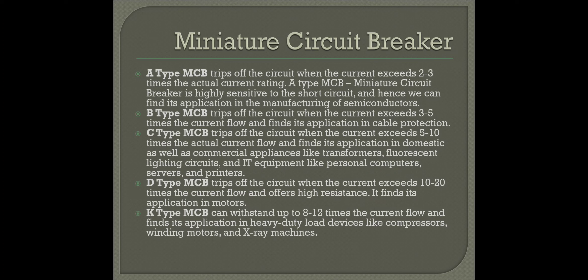C type MCB trips when the current exceeds 5 to 10 times the actual current flow. It finds application in domestic as well as commercial applications and is used in transformers, lightning circuits, and personal computers. K type MCB will withstand up to 8 to 12 times the current flow and finds application in heavy-duty loads such as compressors, winding motors, and X-ray machines.